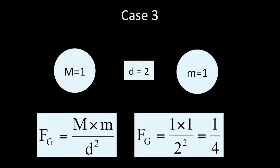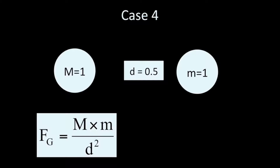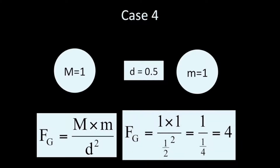If the distance was three instead of two, I would have three squared, and the force would be one over nine. Now consider when I've decreased the distance by half — it's 0.5, or one half. Putting the numbers in: one times one divided by the square of 0.5. One half squared is one fourth, so one divided by one fourth is four. When I decreased the distance by half, I actually quadrupled the gravitational force. The closer you bring two objects together, the bigger the force will be — and by a lot.